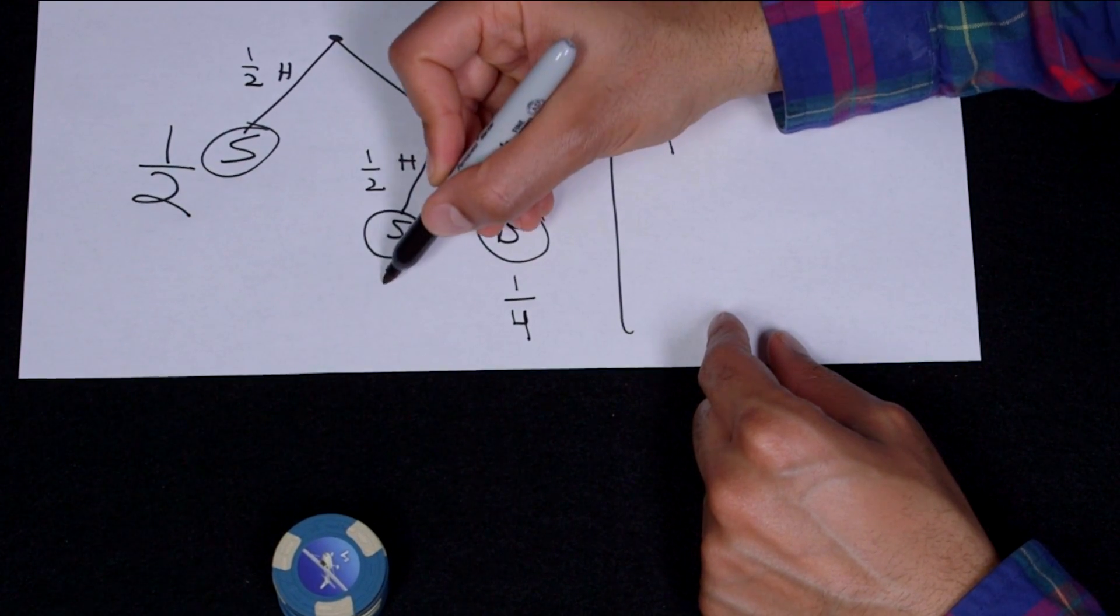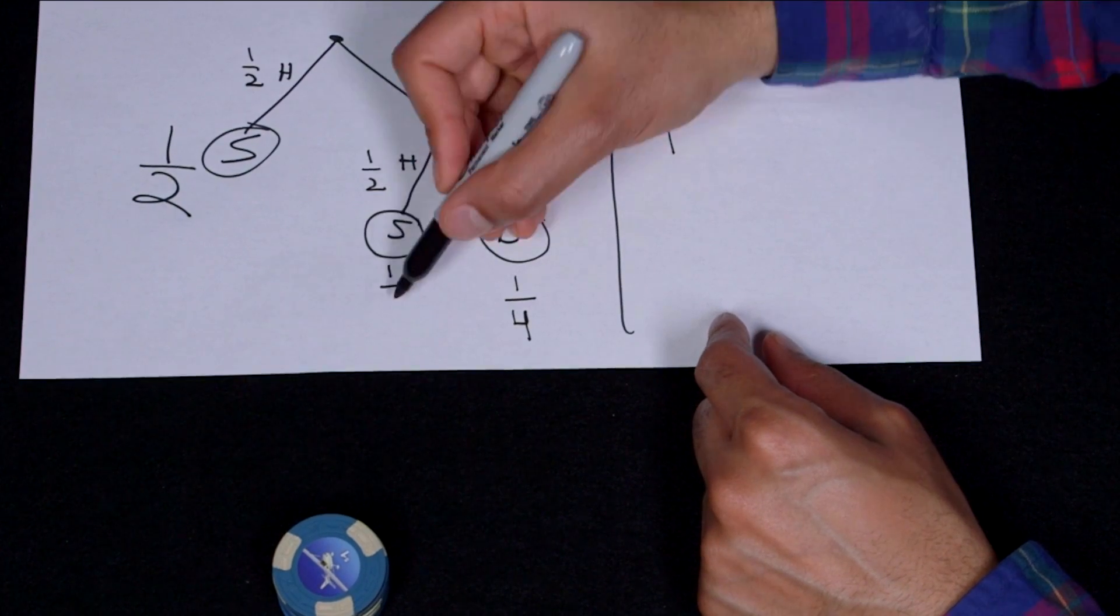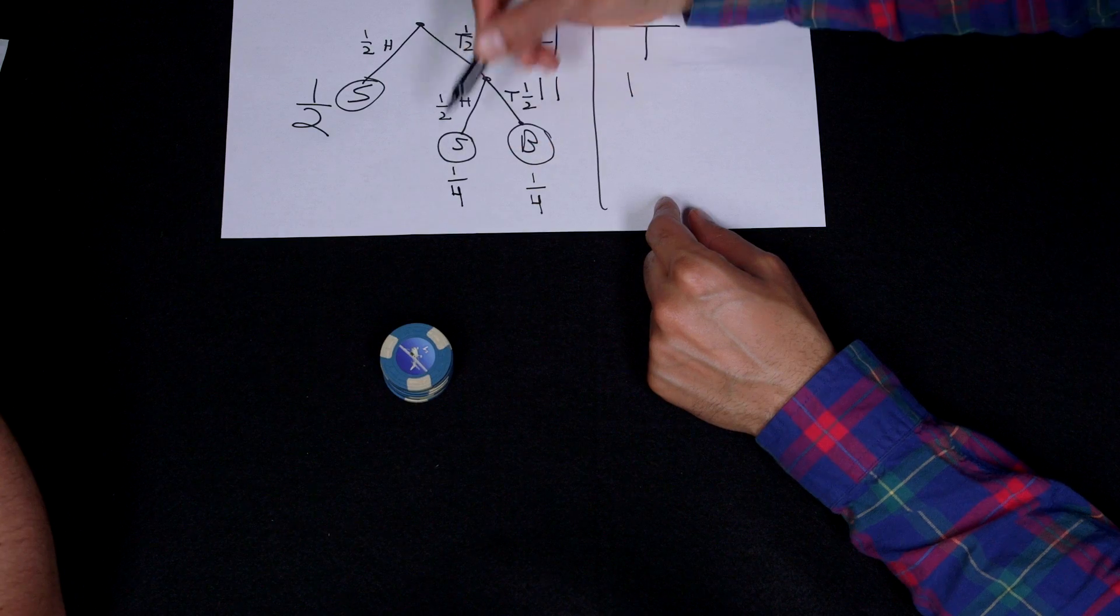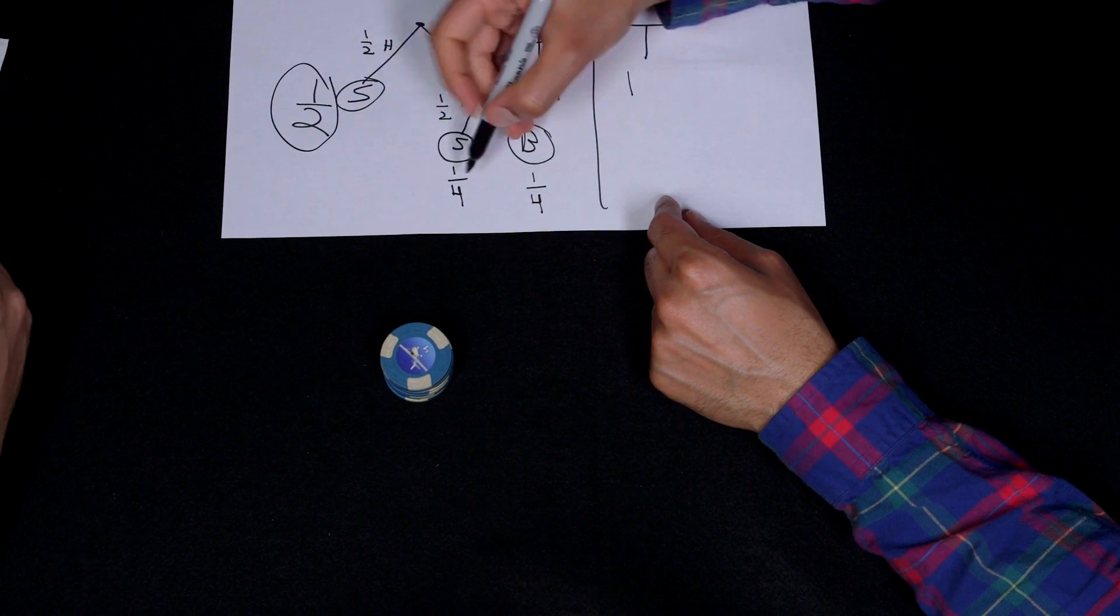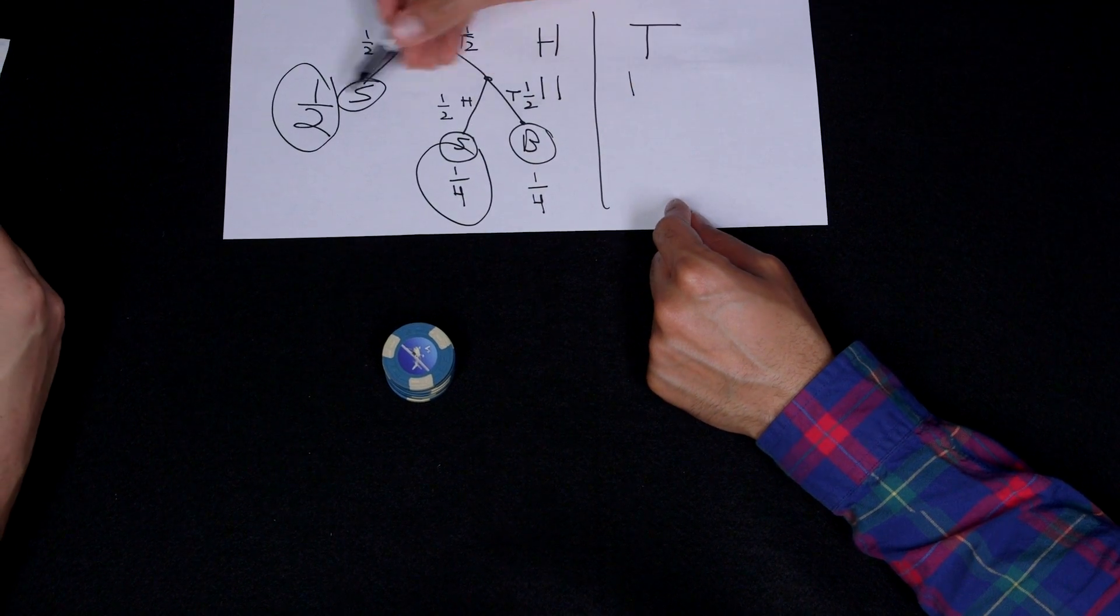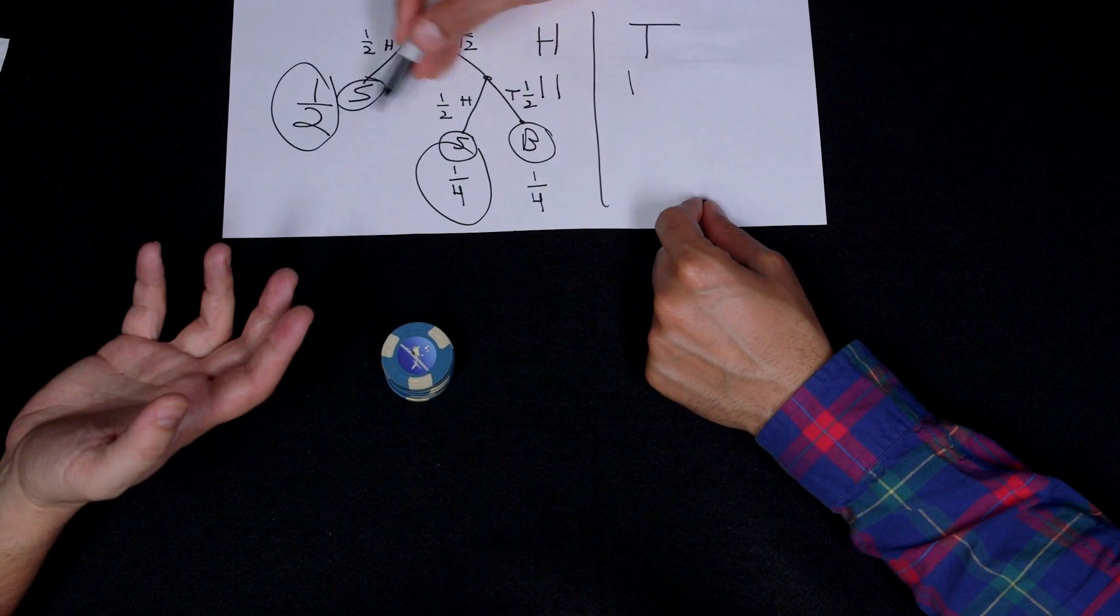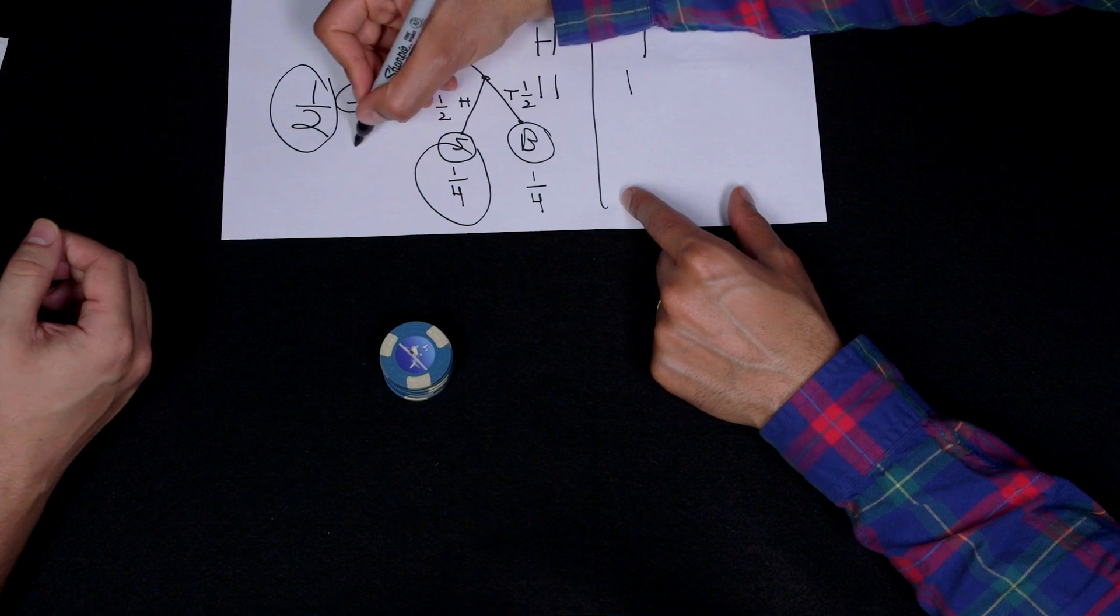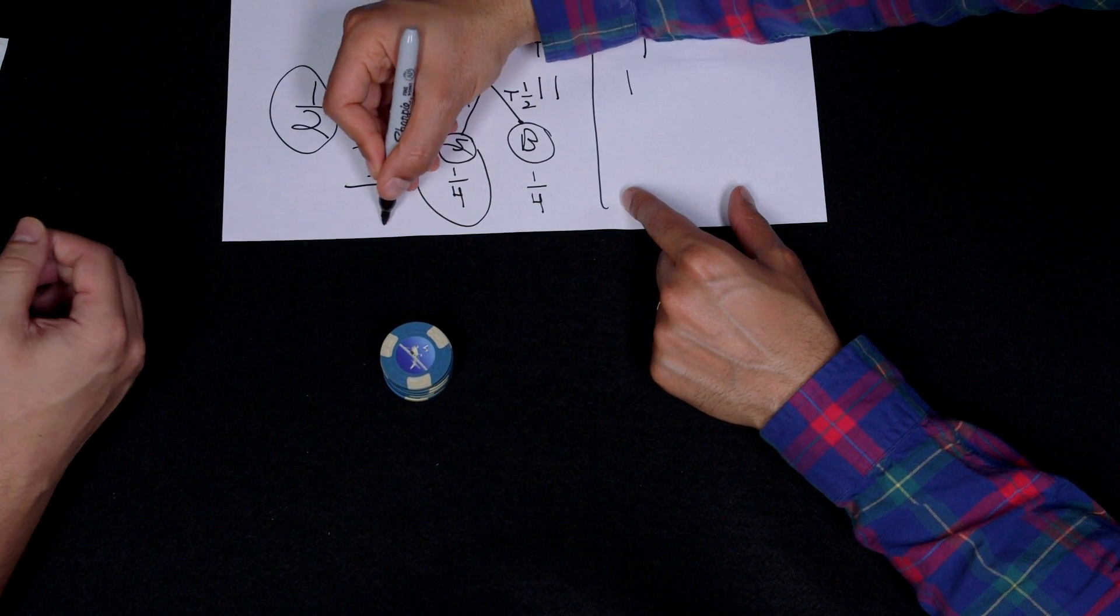And there's a one-fourth chance of us getting a tails and then another heads. So I have a one-half plus one-fourth chance of winning. One-half plus one-fourth, that's two-fourths plus one-fourth. I have a three-fourths chance of winning.